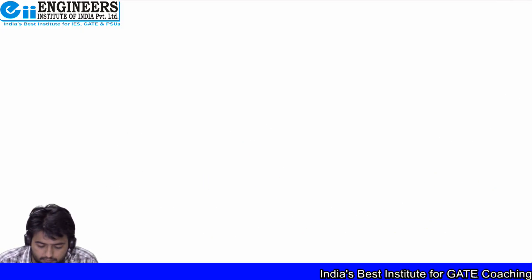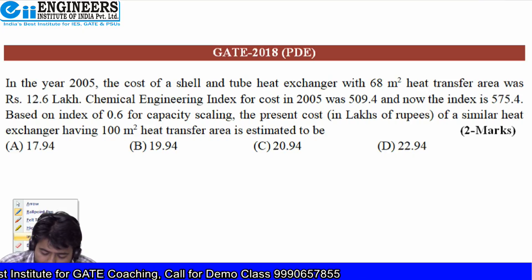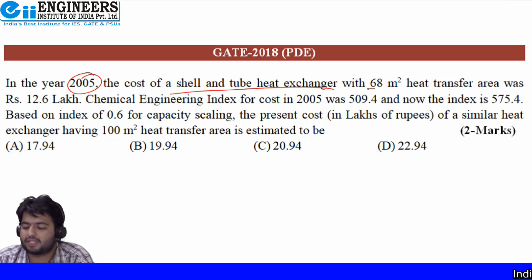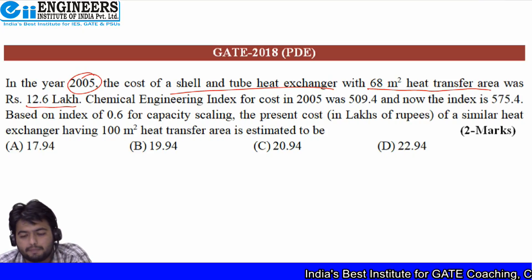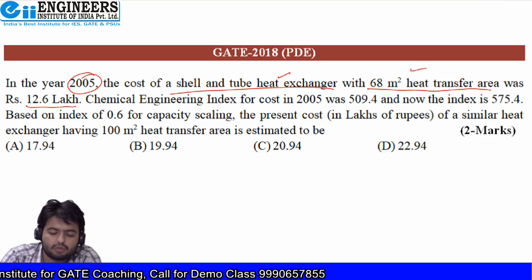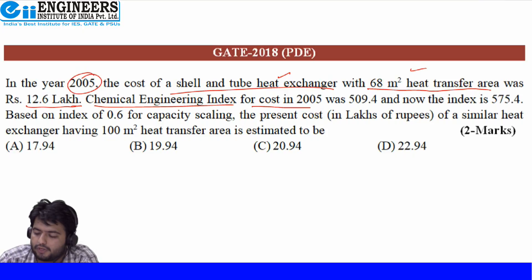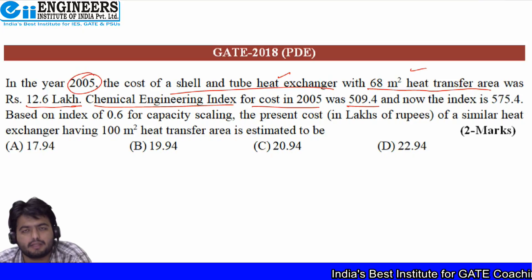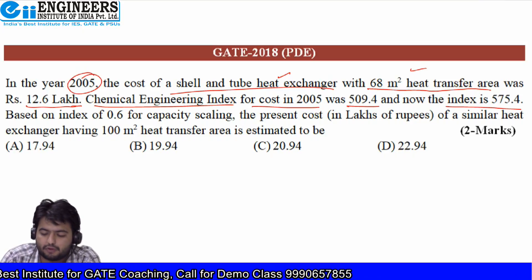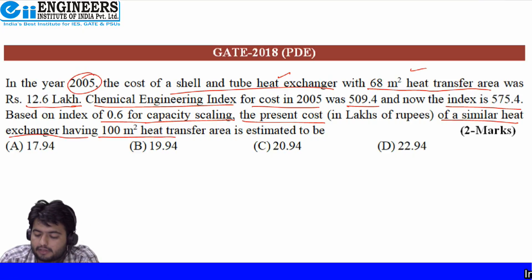The next question is from Plant Design and Economics. In 2005, the cost of a shell and tube heat exchanger with 68 m² heat transfer area was Rs. 12.6 lakhs. The chemical engineering cost index for 2005 was 509.4. Now, suppose you have to buy a similar type of equipment at present, where the index is 575.4. Based on a capacity scaling index of 0.6, find the present cost of a similar heat exchanger having 100 m² heat transfer area.